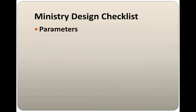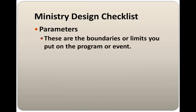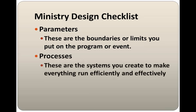Every ministry has parameters — the boundaries or limitations you put on the program or event. For instance, if you're setting up a children's ministry, it's probably not going to include your middle school and high school; the boundary is age-related. The next item is your processes — every ministry has processes. These are the systems you create to make everything in your program run two ways: efficiently and effectively.